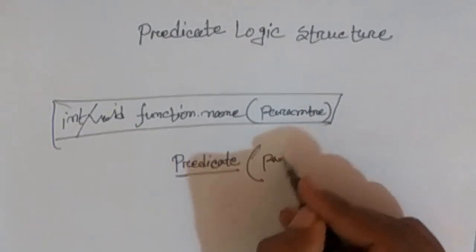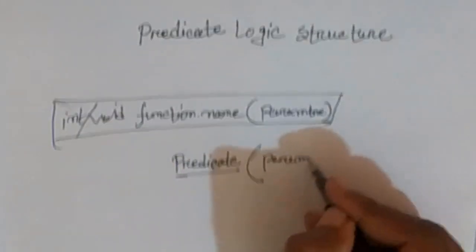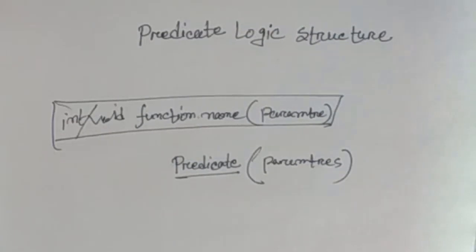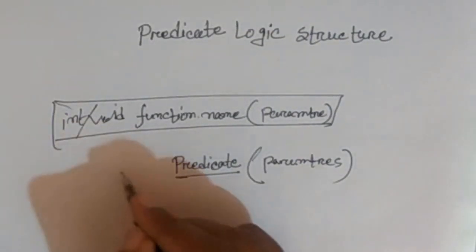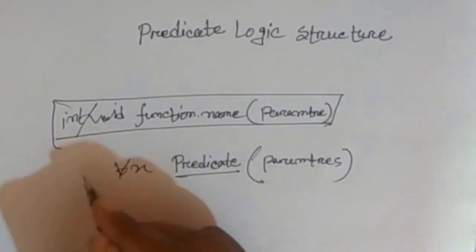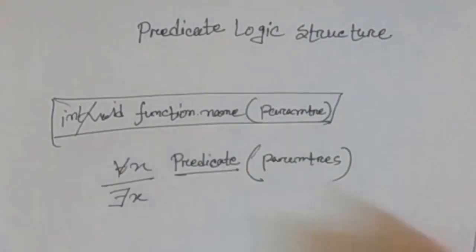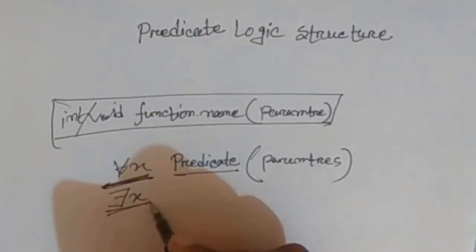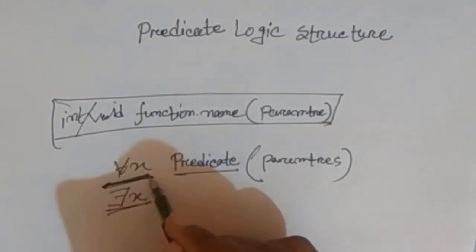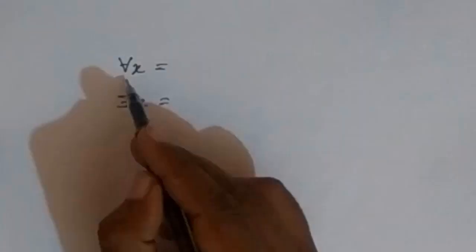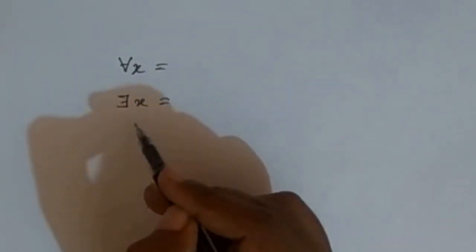And in other words, we have parameters. All of x and there exists x are used — these are quantifiers. These are universal quantifiers and existential quantifiers.